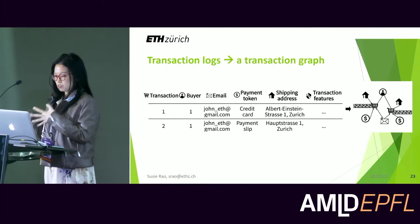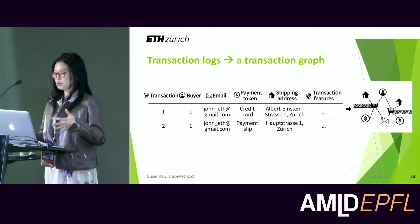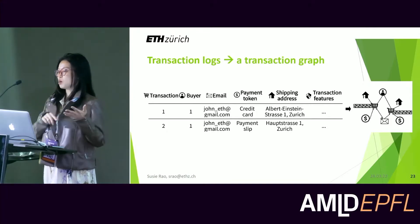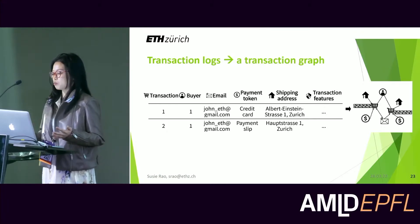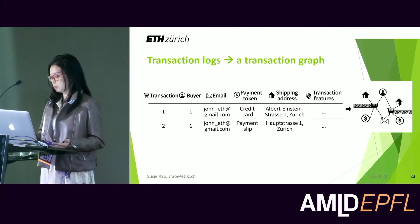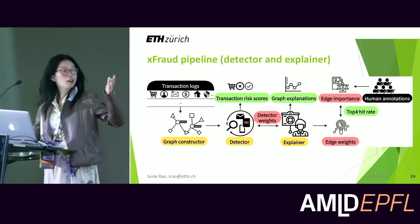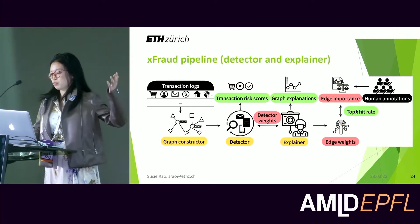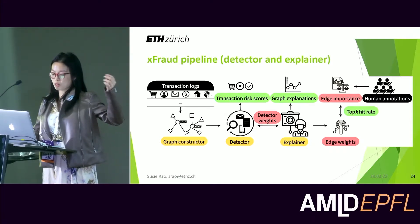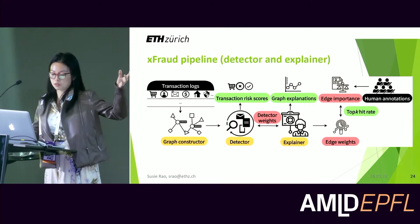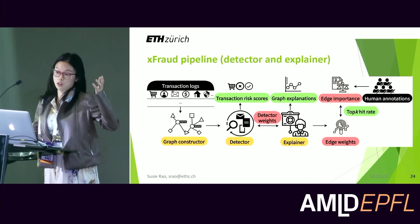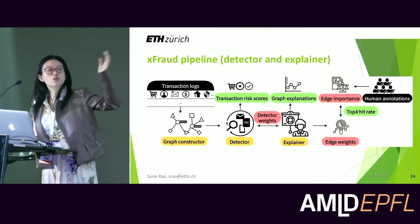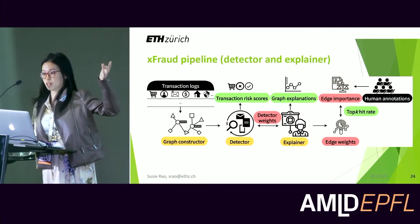We first took a transaction log and then looked at the entities a buyer uses when a transaction is made: emails, payment tokens, shipping addresses, and risk-related transaction features generated by the in-house system. We threw all this into the graph constructor and built a detector on that. As Kenza already mentioned, we take the weights of the explainer from the detector — so we don't retrain the explainer. You can then use the explainer to generate graph explanations by combining topological features that are task-agnostic from the network, and we benchmark this against expert human annotations.